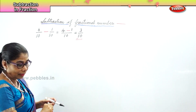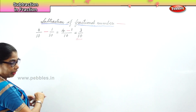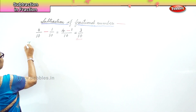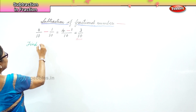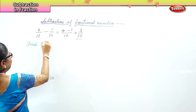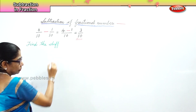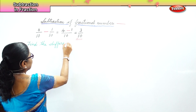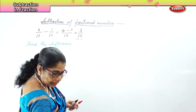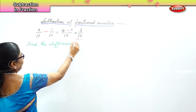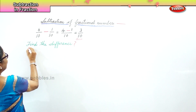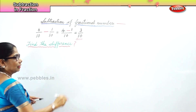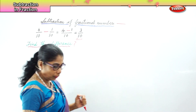That clear? Now let's do some 'find the difference'. So we are going to do some find the difference — and that's what we did. The difference between 4 by 10 and 1 by 10 is what we found. Now let's work out the next sum.